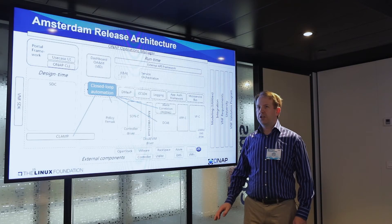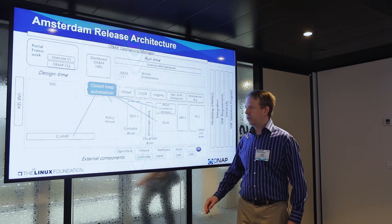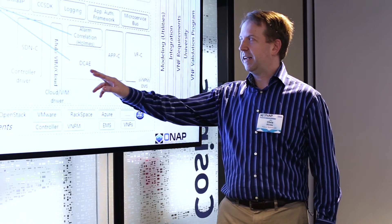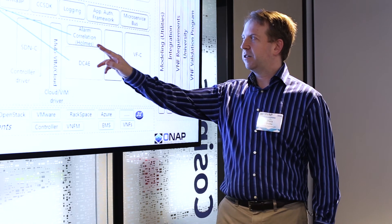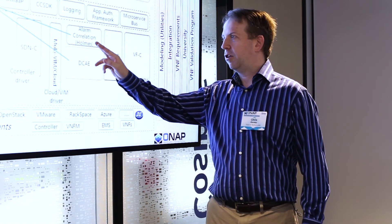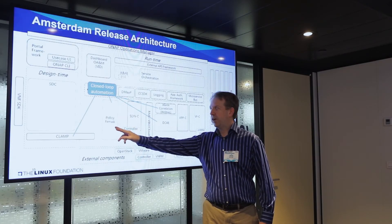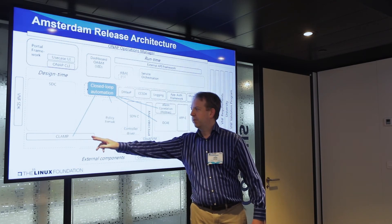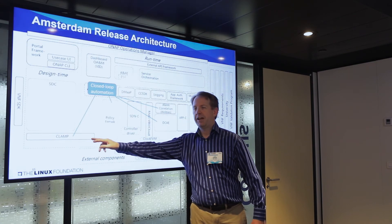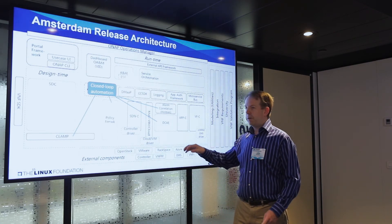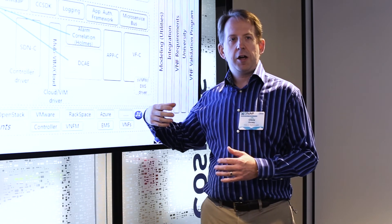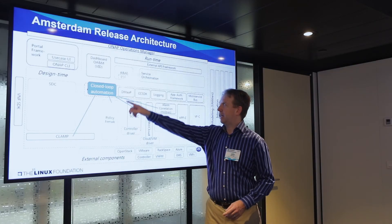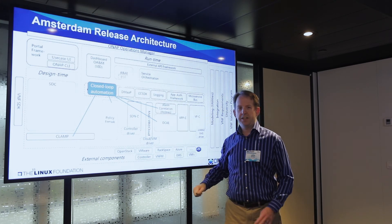We have a series of projects that support closed-loop automation within ONAP. We have the DCAE project, which is providing data collection and analytics. We have the HOMES project, which is providing alarm correlation. And we have a policy framework project that's applying operator policies. And CLAMP, which is the closed-loop automation project. Combined, these projects monitor the network, and in case of any problems, they can connect back to the orchestrator to make any changes that are required.